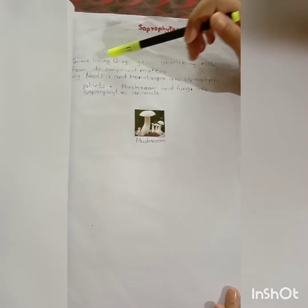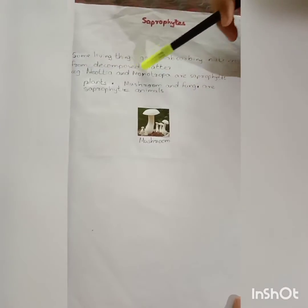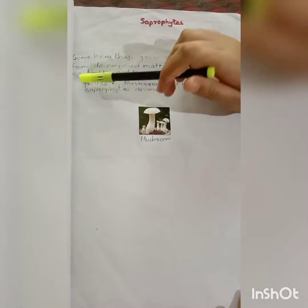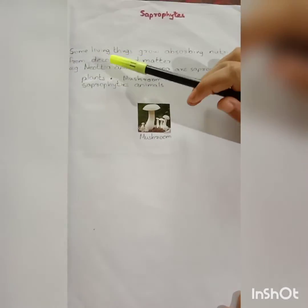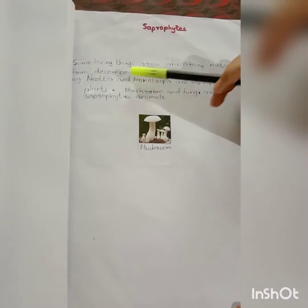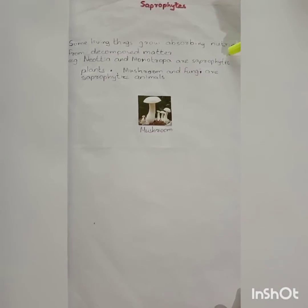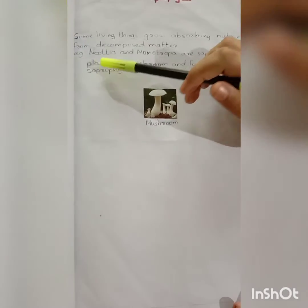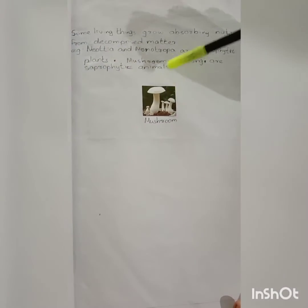Saprophytes. Some living things grow by absorbing nutrients from decomposed matter. Example: neotea and monotropa are saprophytic plants; mushroom and fungi are saprophytic organisms.